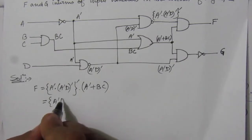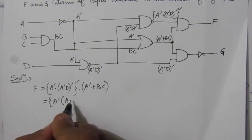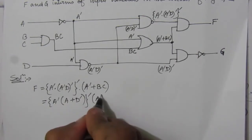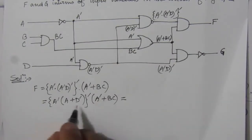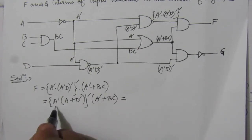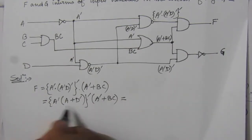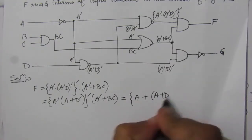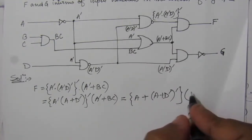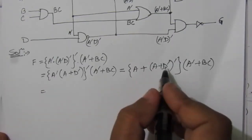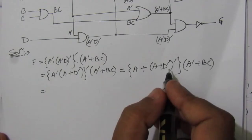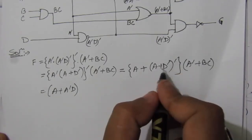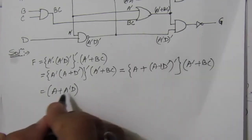Now simplifying the inner expression: (A-bar · (A-bar · D)-bar)-bar. Applying De Morgan's, (A-bar · D)-bar = A + D-bar. So we have (A-bar · (A + D-bar))-bar. Expanding inside the bracket, this is in the form (A·B)-bar, so by De Morgan's: A-bar-bar + (A + D-bar)-bar = A + (A-bar · D). Then the whole expression has an outer complement applied.